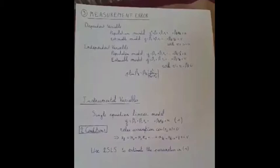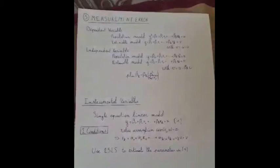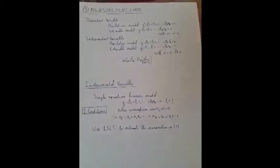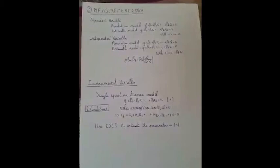The third source of endogeneity can come from measurement errors. When variables are measured incorrectly, the error becomes part of the regression error. A measurement error in the dependent variable will lead to inconsistent OLS estimates only when the measurement error is correlated with the explanatory variable. When there is no correlation, there will be no inconsistent estimates but an impact on the error variance and the parameter covariance.